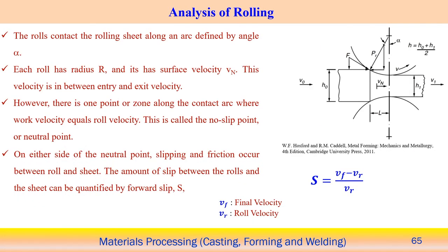Now, looking at the analysis of rolling: the roll contact arc is defined by the angle alpha. This angle alpha defines the arc in contact with the workpiece. Each roll has radius R and has a surface velocity. The roller velocity is different from the inlet velocity of the sheet and the outlet velocity of the sheet.